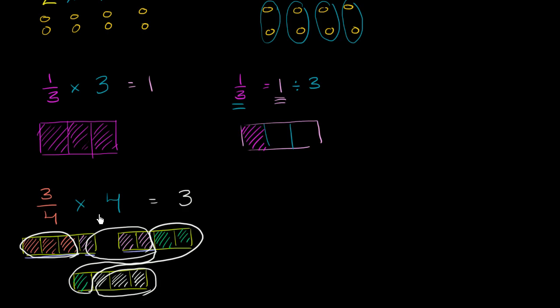Well if 3 fourths times 4 is equal to 3, that means that 3 divided by 4, 3 divided by 4 is equal to 3 fourths.